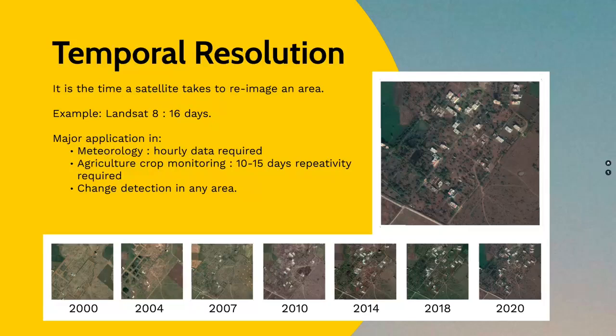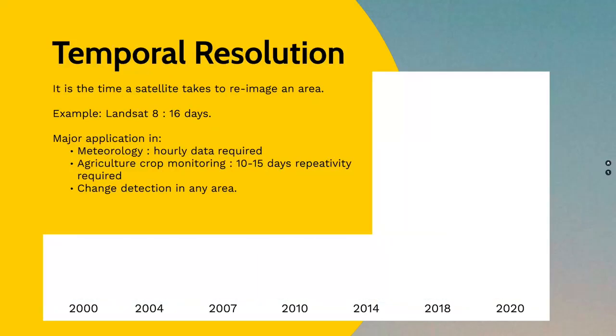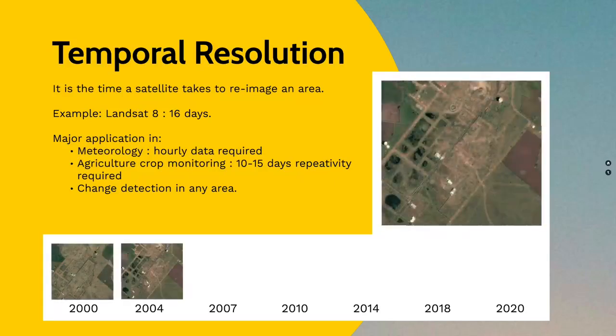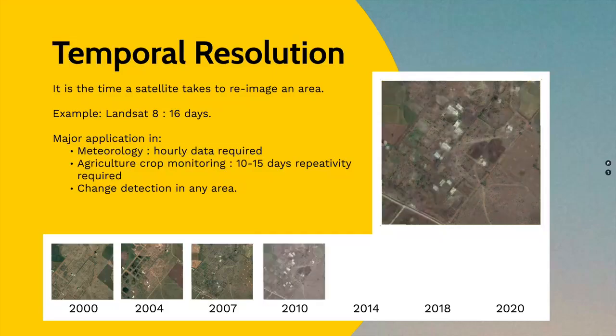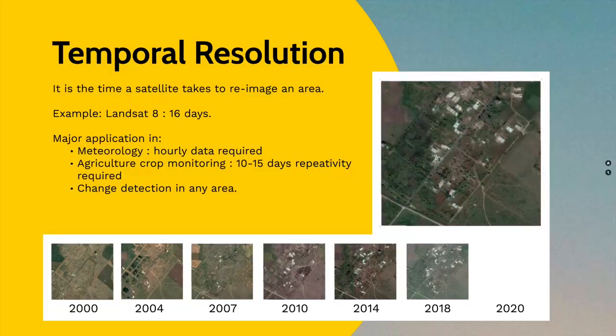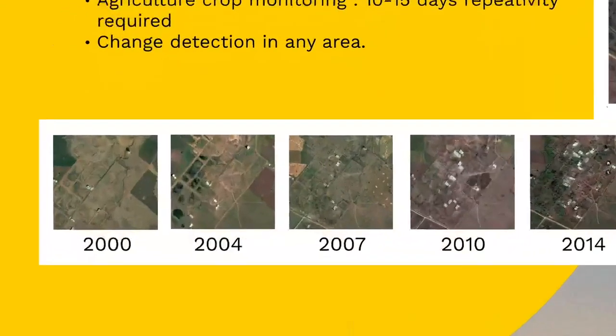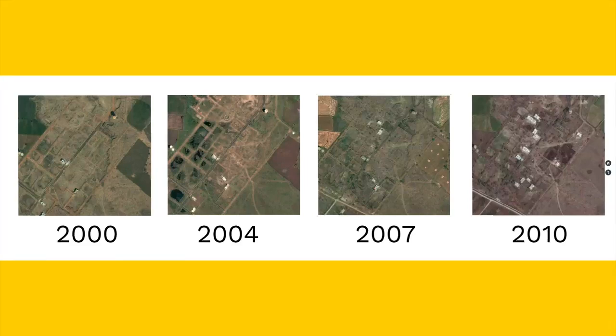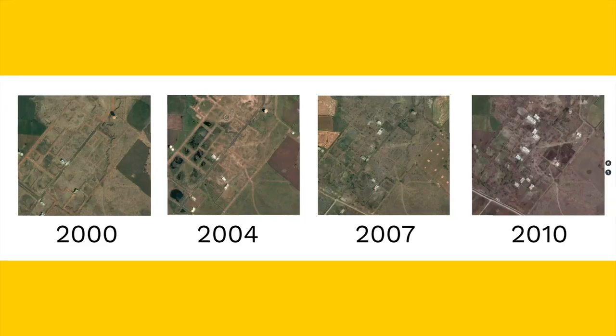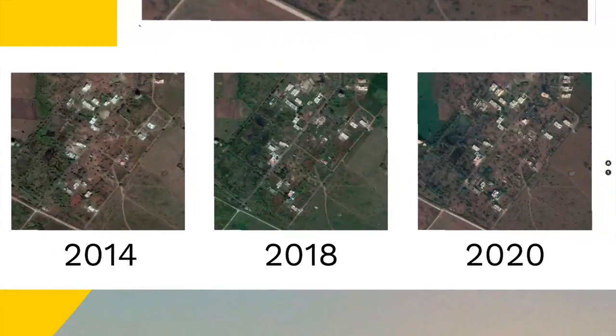Let us consider an example of long-period change detection over an area. These images show how the landscape of the area has changed in the span of 20 years. It can be observed how, during the course of time, the urban area has increased and so has the green cover.